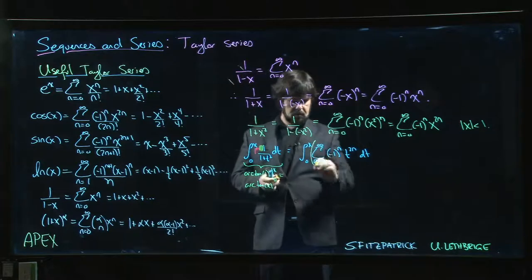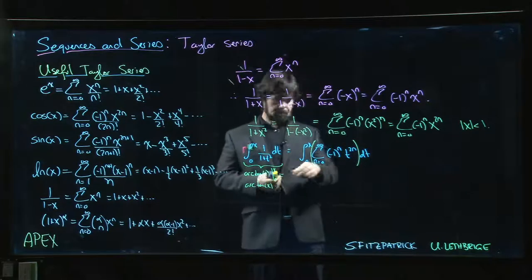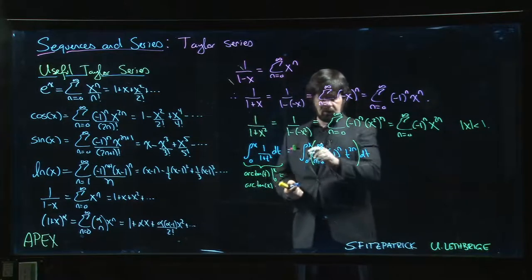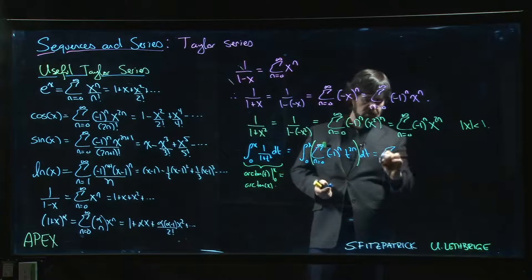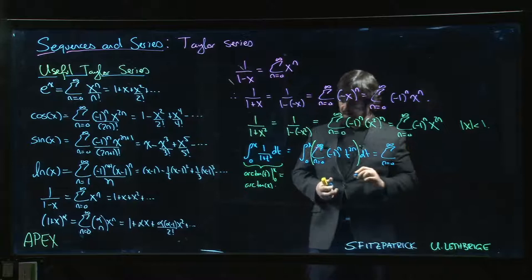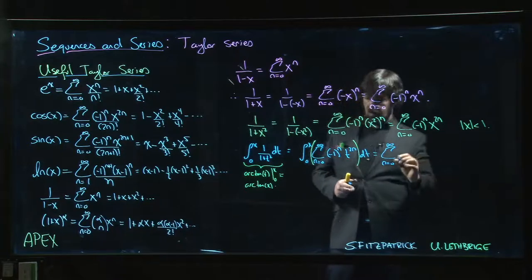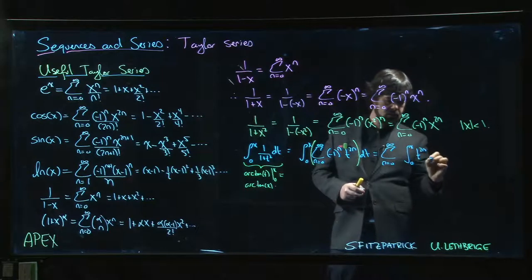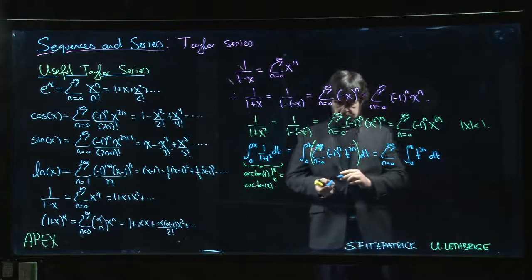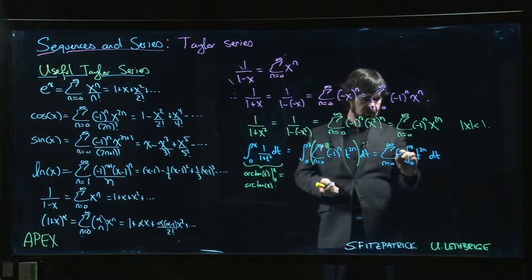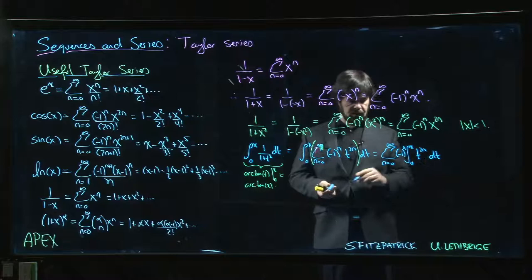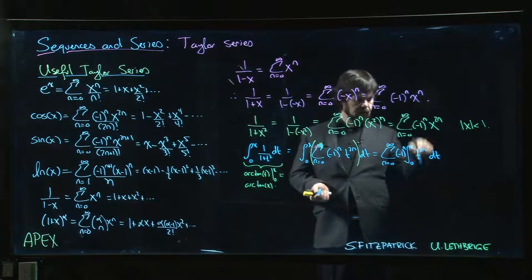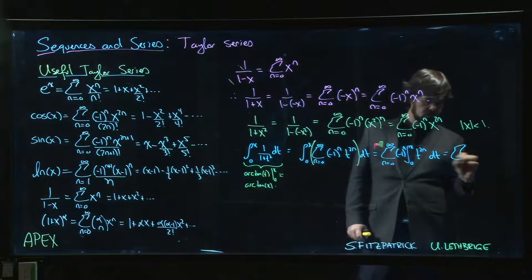But this is also equal to the integral from 0 to x of the sum n going from 0 to infinity of minus 1 to the n, t to the 2n, dt. So let's be careful here. We have bracketing like so, but we have a theorem that says we're allowed to exchange these two limits. We're allowed to exchange the integral and the sum. So we can write this as the sum n going from 0 to infinity of the integral from 0 to x of minus 1 to the n, t to the 2n, dt. We can pull that minus 1 to the n out; that's a constant as far as the integral is concerned. And that's a simple enough antiderivative to do, and we can plug in the limits.